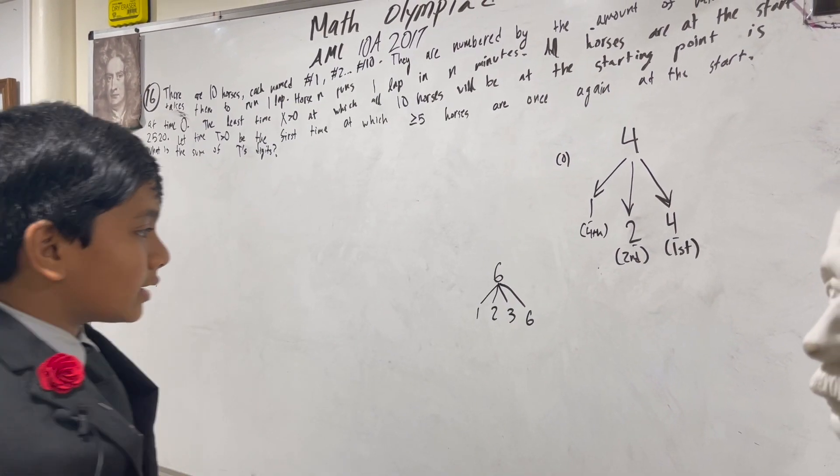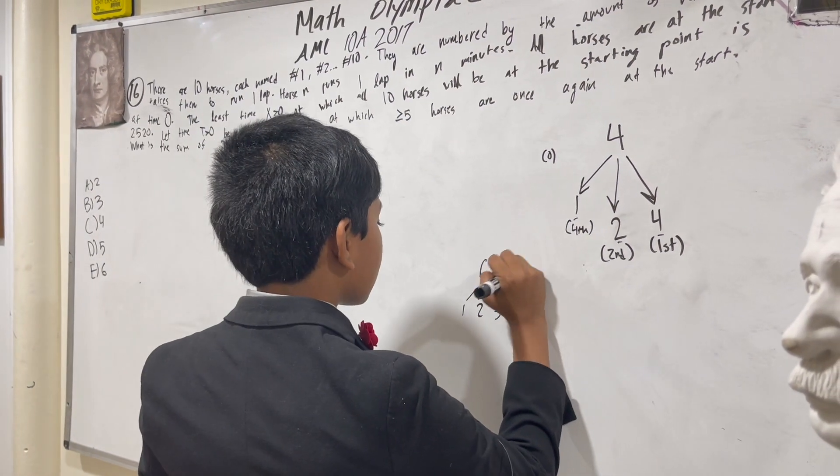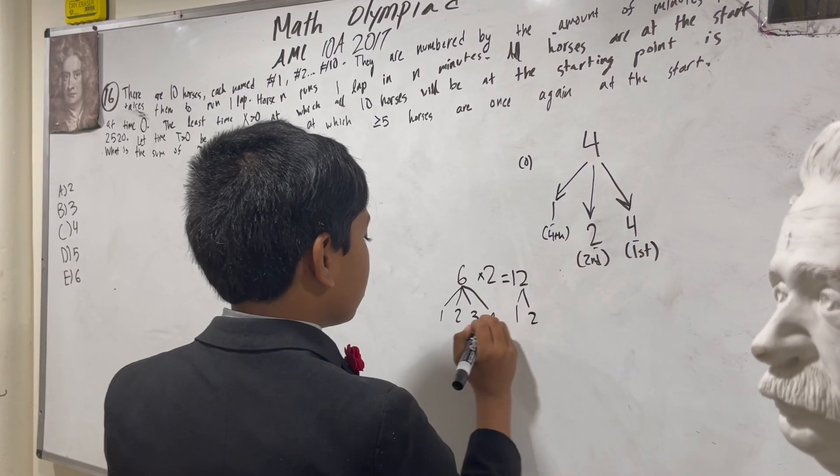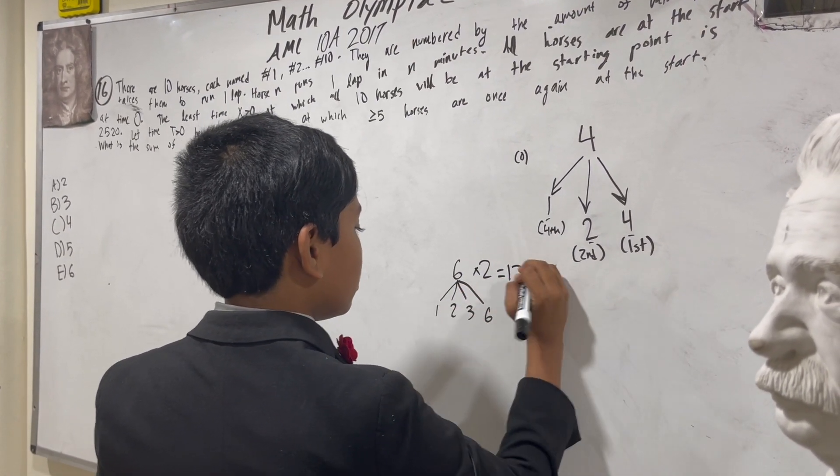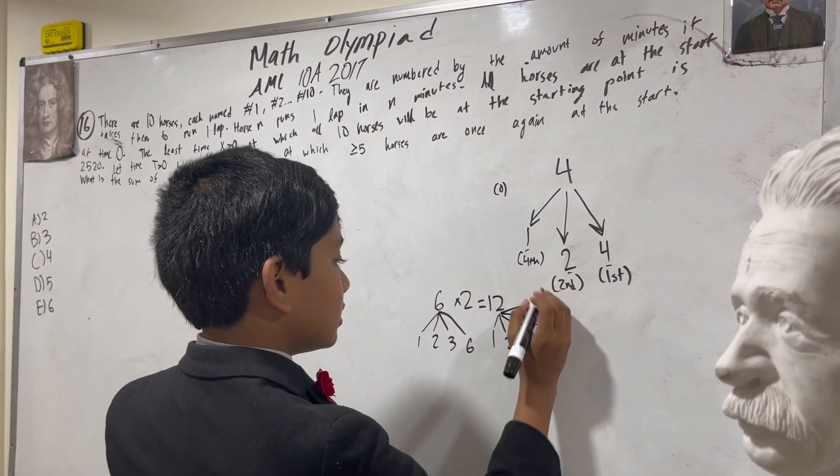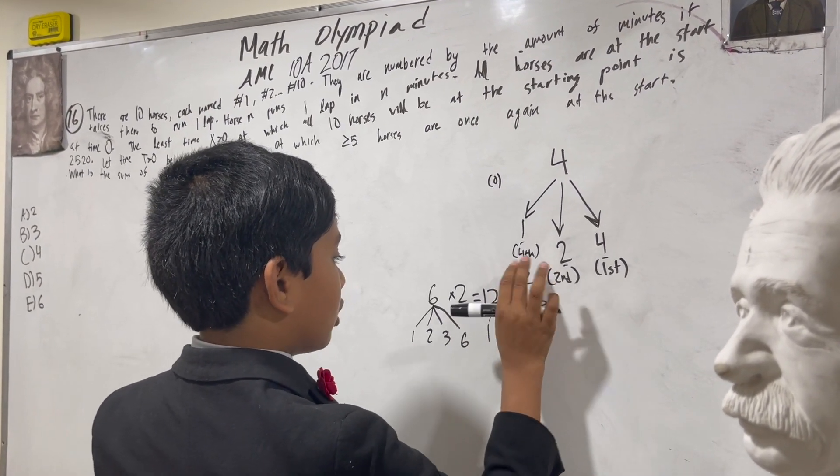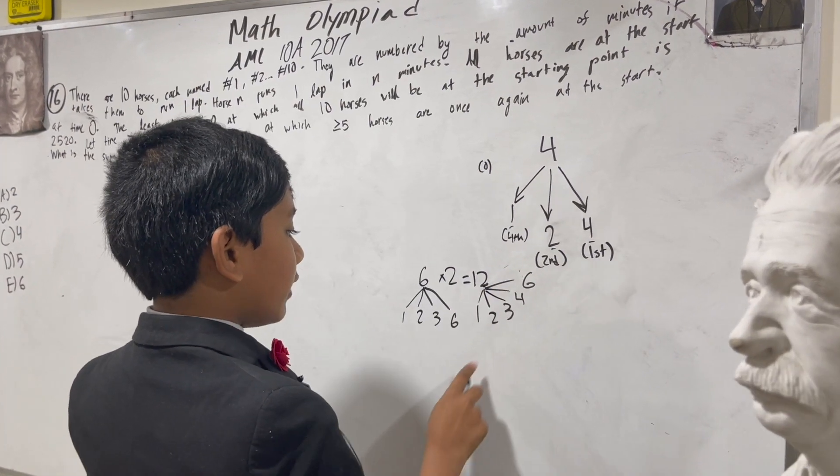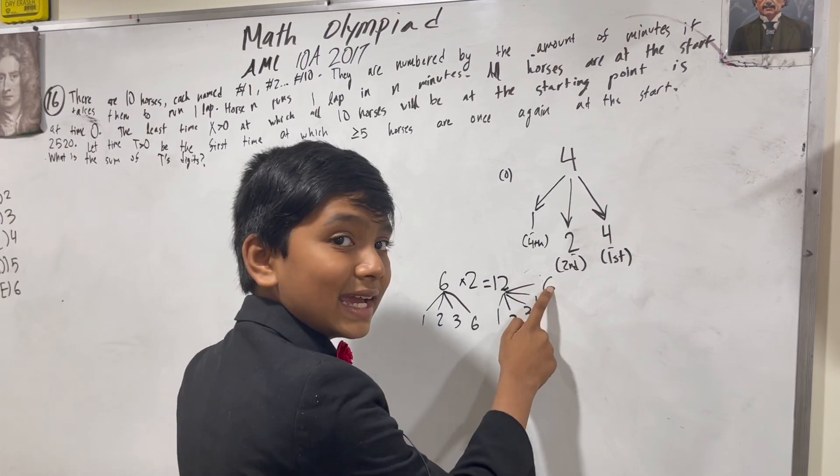The easy thing to do at this point would just be to multiply this by two and get twelve, which would have one, two, since we multiplied this by two, three, four, and six. And also twelve, but there's no horse twelve. So twelve has one, two, three, four, and six.